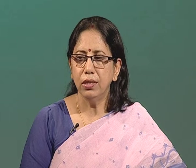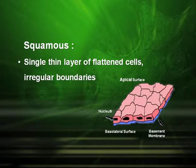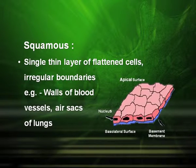Squamous epithelial tissues consist of a single thin layer of flattened cells, and their boundaries are irregular — they do not have a smooth boundary wall. Examples include the wall of the blood vessels and the air sacs of the lungs.